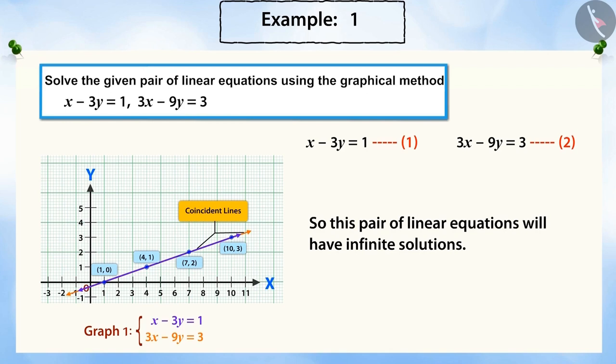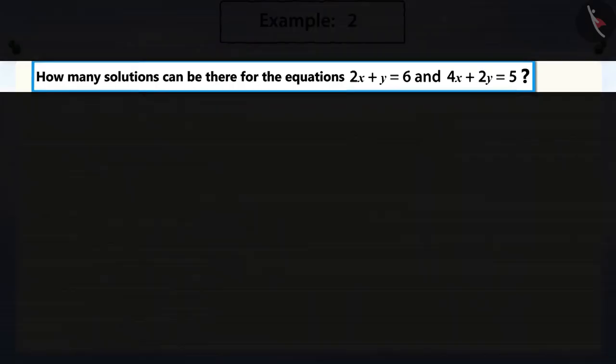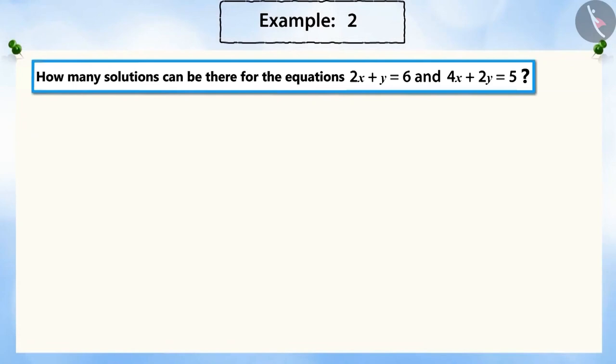Now, let's see another example. How many solutions can be there for the given pair of linear equations: 2x plus y equals 6 and 4x plus 2y equals 5?